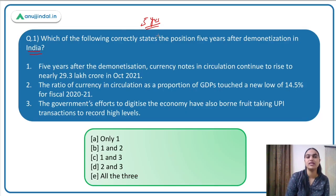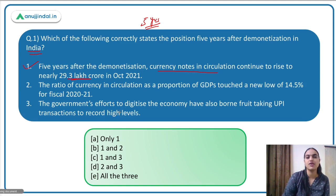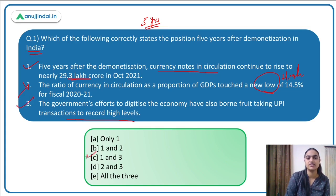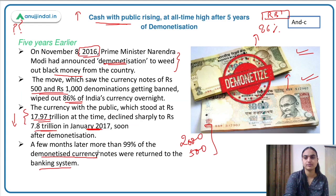Coming back to the question: the first statement says currency notes in circulation continue to rise — yes, that is correct. The second says the ratio of currency in circulation as a proportion to GDP touched a new low of 14.5% — incorrect, it touched a new high. The third says government efforts to digitize the economy have borne fruit, taking UPI transactions to record high levels — yes, correct. So the first and third are correct; the answer is option C.